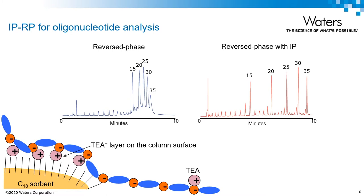In ion pair reverse phase, the retention mechanism is governed by the ion pairing between the charged oligo and the ion pairing agent. In TEAA, the positive charge on the triethyl ammonium ion forms a positively charged layer on the surface of the stationary phase, and it interacts with the negatively charged phosphate backbone of the oligo. By increasing the organic concentration, the ion pairing agent dissolves and the analyte is eluted. The weak hydrophobicity of the bases can also contribute to retention. On the left, the oligonucleotide standard shows poor selectivity, especially for longer oligos, but when we incorporate an ion pairing agent, as shown on the right, the resolution is greatly improved.